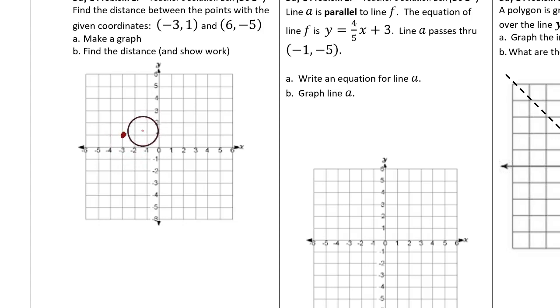Negative 3 comma 1 is located here. 6 comma negative 5 is located here. Connect these together with a nice straight segment.